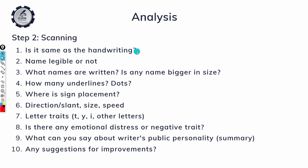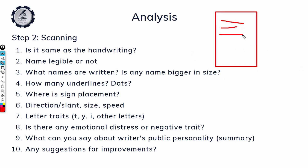The first scanning step is to check if the signature is the same as the handwriting. If you have a handwriting sample, check whether the letters in both the signature and handwriting are the same — is the size the same, are other things the same? This is the best way to do a whole analysis. If you only have a signature sample, then you can follow from the second step: check if the name is legible or not.